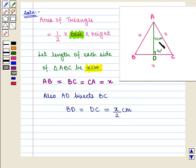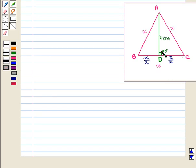So here we have AB is equal to x, AC is equal to x, BC is equal to x, and BD is equal to x by 2. Now here we see that triangle ADC is a right-angled triangle.